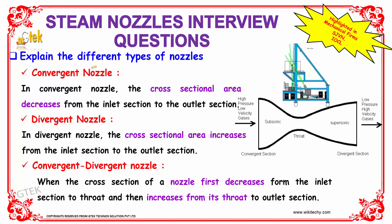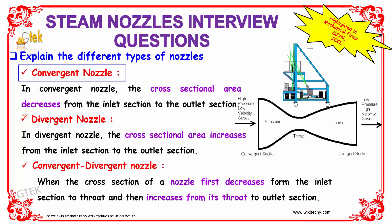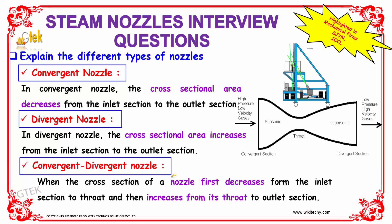Explain the different types of nozzle. So, the different types of nozzles are: convergent nozzle, divergent nozzle, and convergent-divergent nozzle.